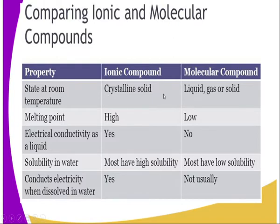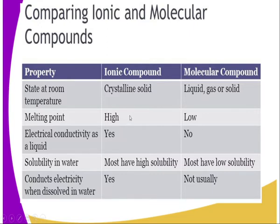Let's look at the following properties. State at room temperature — ionic compounds are crystalline; molecular substances are liquid, gas, or solid. Melting point is very high in ionic compounds; in molecular substances it's very low due to the weak van der Waals forces. Electrical conductivity as a liquid — ionic compounds conduct in the molten state because they have mobile ions, but molecular substances do not conduct. Solubility in water — ionic compounds mostly have high solubility, but molecular compounds mostly have very low solubility in water.